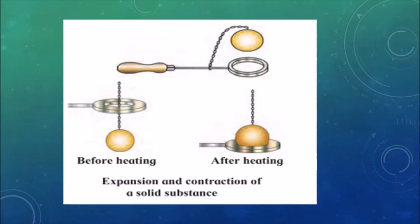We are going to see the expansion and contraction of solid substances due to heat — whether they expand or contract when given heat. To do this, we take a metal ring and a solid metal ball. Before heating, the ball passes through the ring. Now we heat the ball and try to pass it through the ring again.